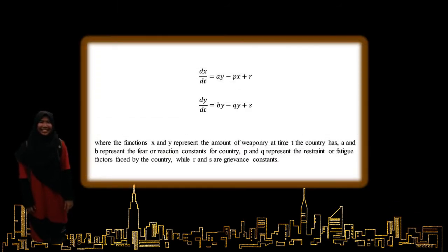According to Ahsan 2006, the mathematical model of arms race proposed by Lewis Richardson is: the first derivative of X with respect to T equals AY minus PX plus R; and the first derivative of Y with respect to T equals BX minus KY plus S. Where X and Y represent the amount of weaponry a country has at time T; A and B represent the fear or reaction constants for each country; and R and S are grievance constants.